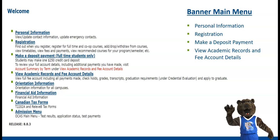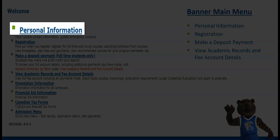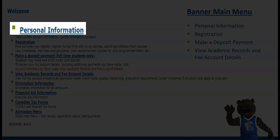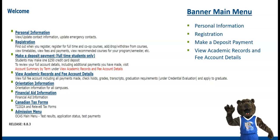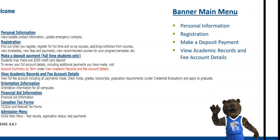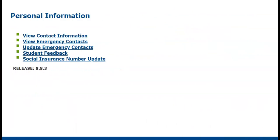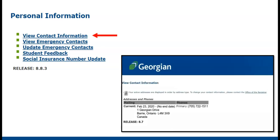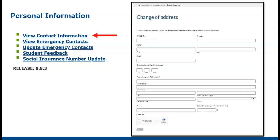First on our list is the Personal Information tab. At the top of the Personal Information menu items, we are able to view your current address and contact information. If you've changed your address, please complete and submit the address change form, accessible from the Georgian College website.